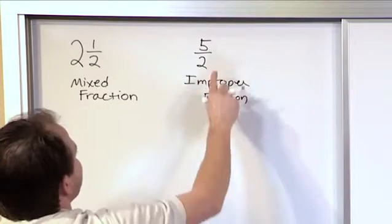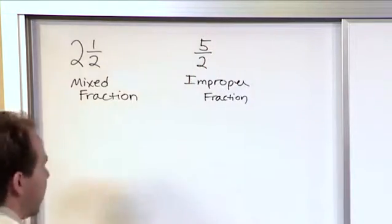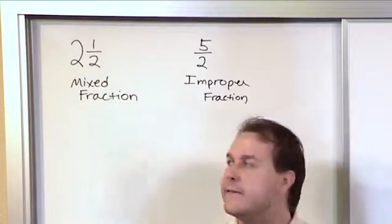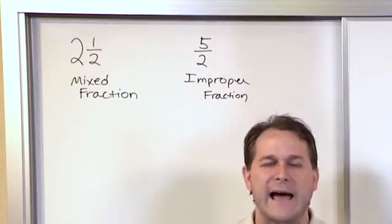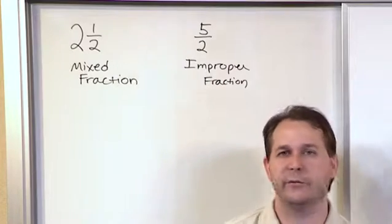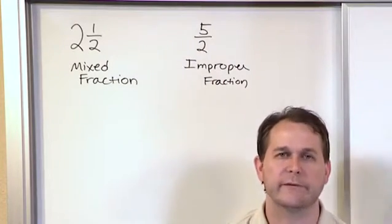The reason it's improper is because the numerator is bigger than the denominator. It turns out that the mixed fraction two and a half represents when you have something more than one whole object. So two and a half pies, three and a half pumpkin cakes or whatever.